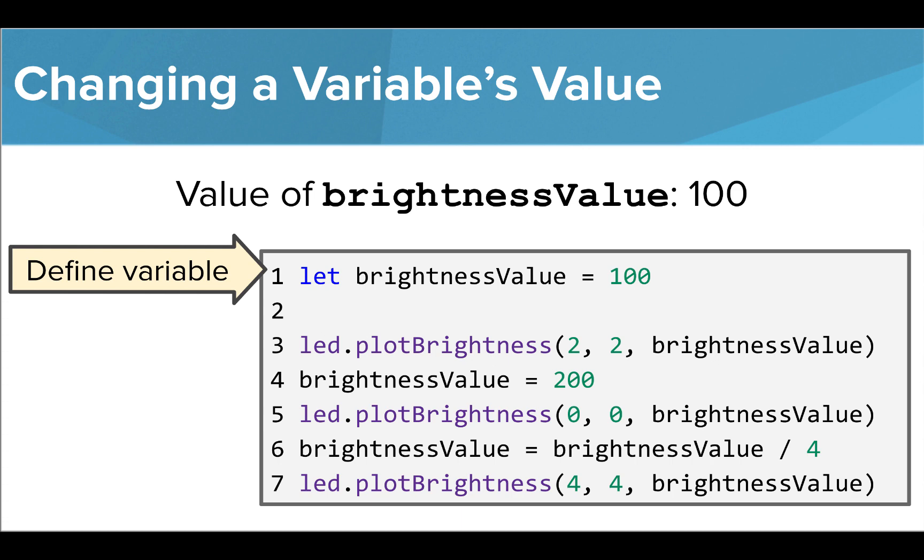At the beginning of this code, we created a variable called brightnessValue and set its value to 100. When we use the variable in line 3 to set the brightness of the middle LED, it will have a brightness of 100. Note that we do not use the word let after creating the variable.